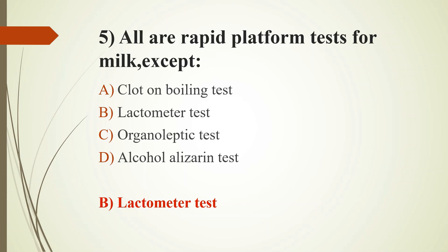The Alcohol Alizarin test is also a rapid platform test for milk. The four rapid platform tests for milk are: organoleptic test, clot on boiling test, alcohol test, and alcohol alizarin test. The alcohol alizarin test is an exact pH-detecting test; the pH indicator dye used is alizarin. Here, 0.4 gram of alizarin powder is added to 1 litre of 6% alcohol, and the exact pH of milk can be detected by this method.